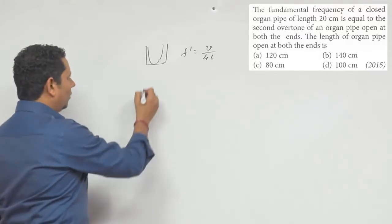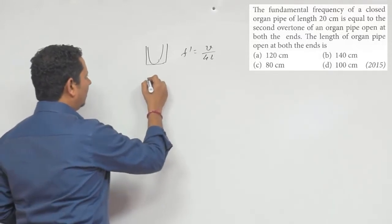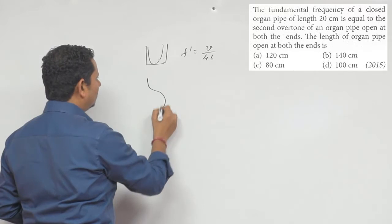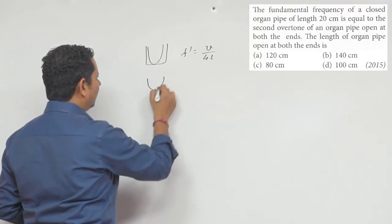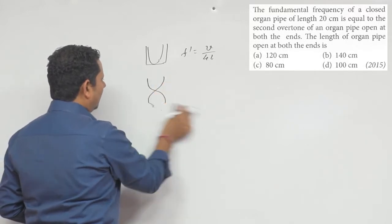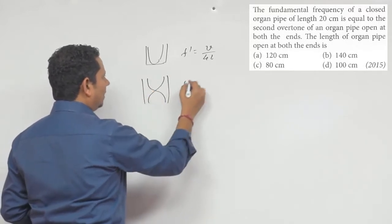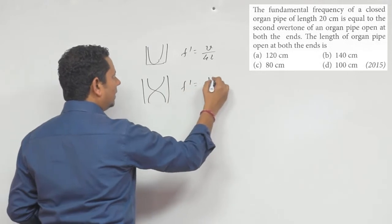If you have an open organ pipe, then the wave will become something like this. An open organ pipe has its own fundamental frequency.